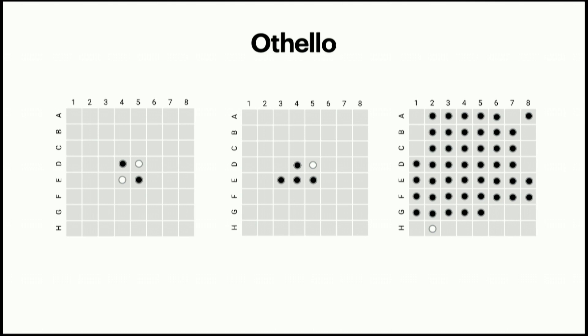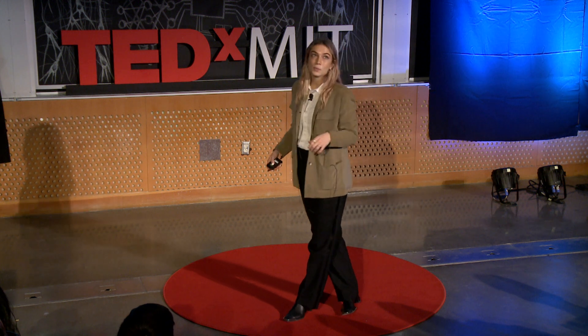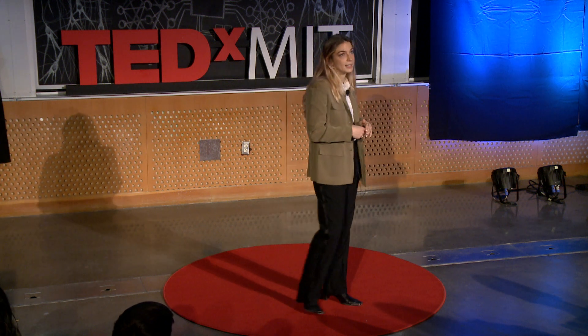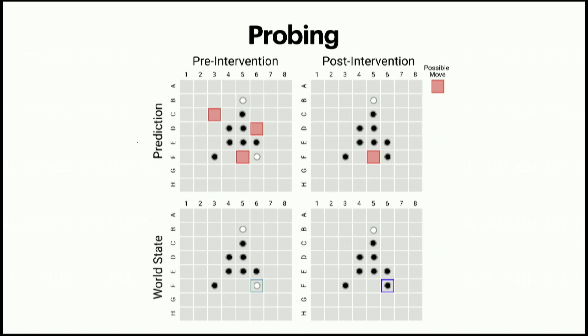Briefly, the rules of Othello: you have some initial placements, you sandwich the opposite color between two of yours, flipping that color to your side, and within 64 moves someone will take over the board. What we did is we trained a model on sequences of Othello moves to predict the next legal move — and it does that really well. But what we cared about was the internal representations. We learned probes on those internal representations to find if they matched not the sequences of moves, but rather the actual underlying board state. And we were able to.